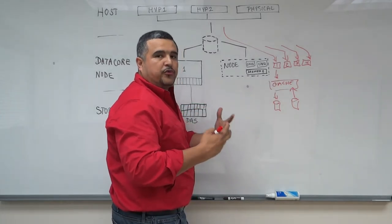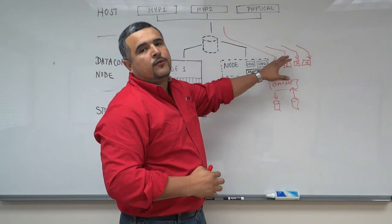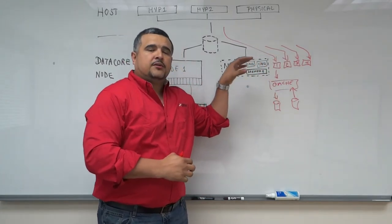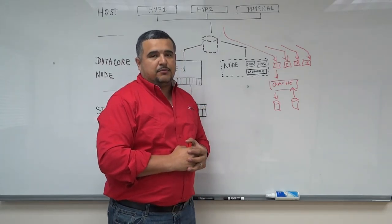So essentially caching handles both reads and writes for the applications. When you combine both parallel I/O and cache performance, this is how you're able to get great performance for your on-demand applications.